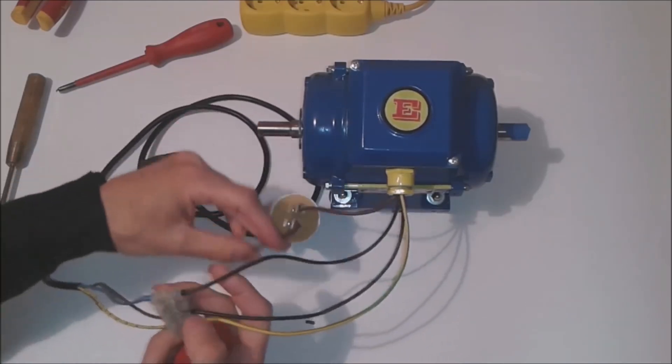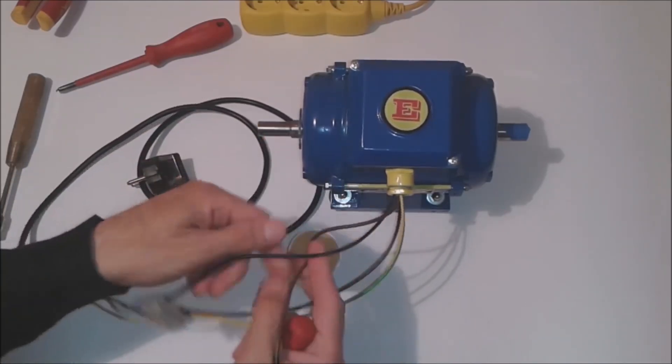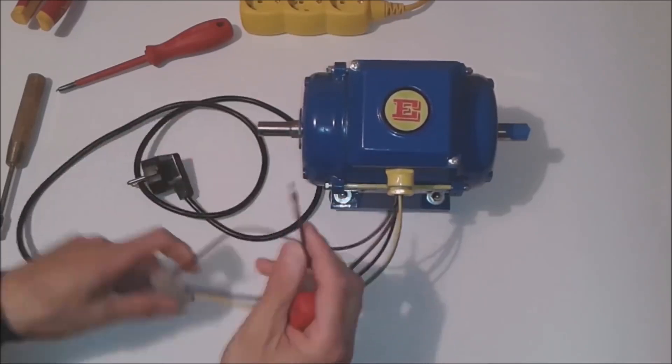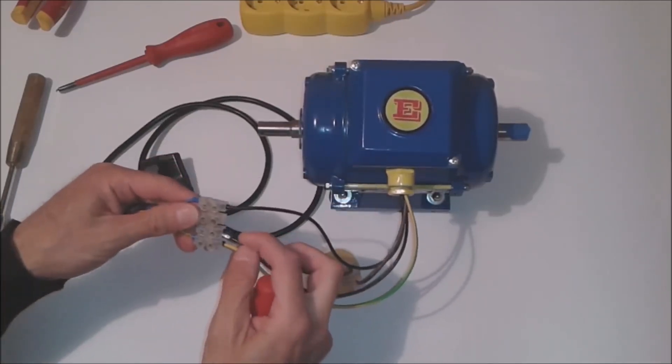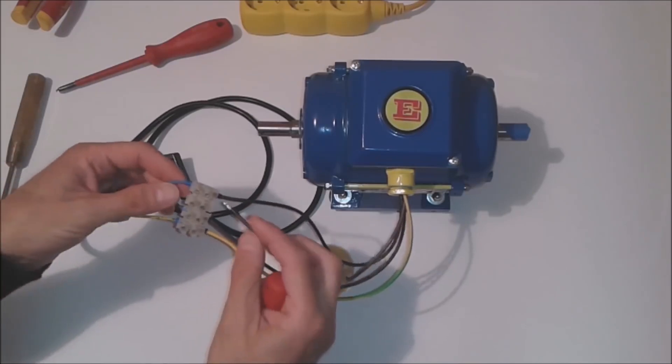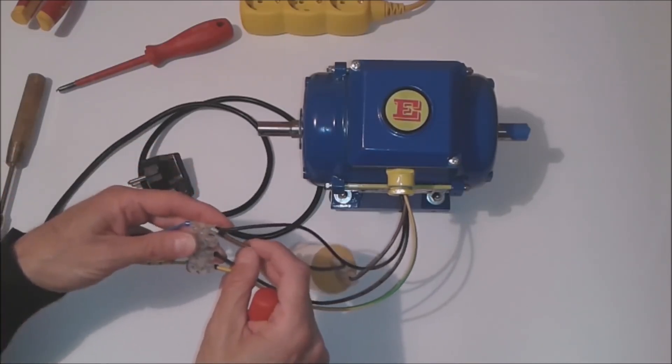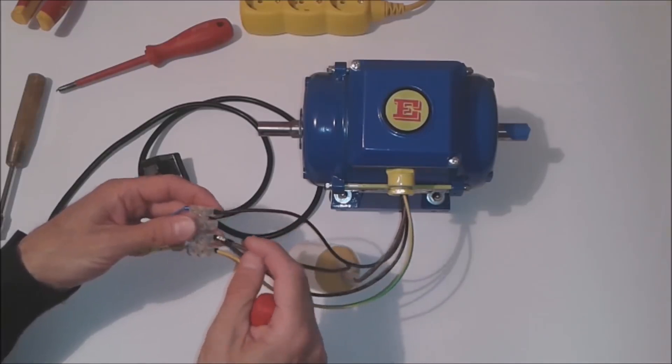We have one more wire left. What should we do with it? We connect it to one of these two connections. On one connection we will have the electric motor turned to one side and on the other to the other side.